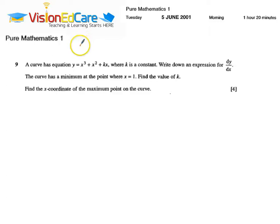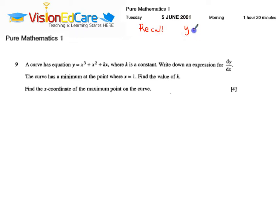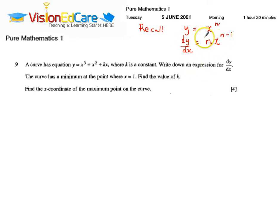Here we have another question from the Pure Maths 1 past paper. Before we do this question, let us quickly review some key facts. Recall, if y equals x to the n, which is the equation of a curve, then the gradient of the curve, which is dy by dx, equals n times x to the n minus 1. We are going to use this principle to find dy by dx.